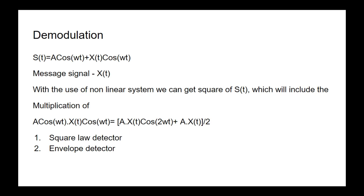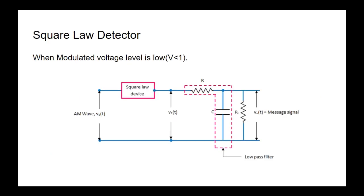We extract the message signal by passing it through a low-pass filter. Demodulation is done through two processes: square law detector and envelope detector. In the square law detector, the diode performs squaring of the input signal — the diode works in the non-linear region. The input is applied to the square law device, its output is passed through a low-pass filter, and the output of the low-pass filter gives us the demodulated message signal. This method is used when the voltage level is less than one.